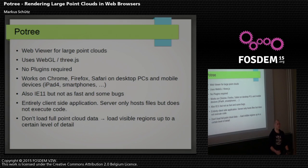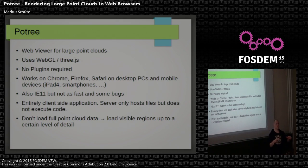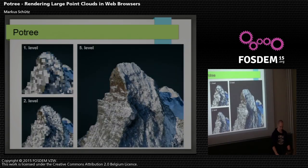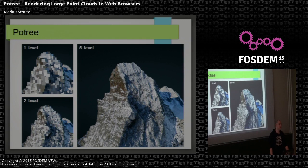The idea behind rendering such large amounts of point cloud data is that you don't load the full point cloud at once. Instead, you only load the part which is visible and up to a certain level of detail — usually about one to two million points at once. This is an example of what it looks like when you open the viewer. At first, you get a very coarse representation of the model, and over the next few seconds more and more points are streamed in until you get the final level of detail.